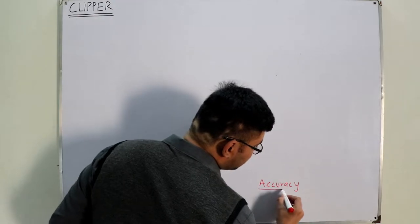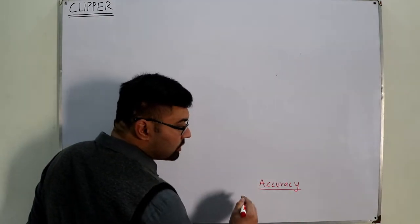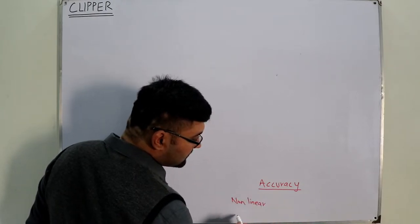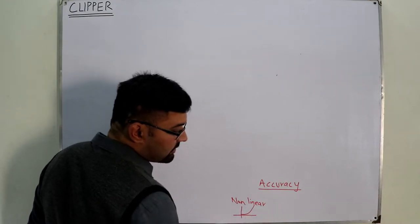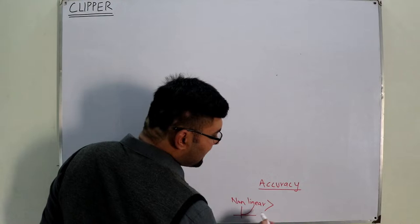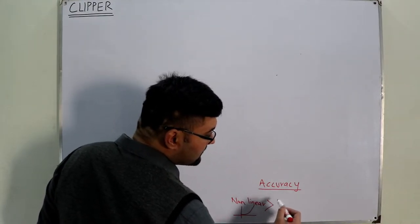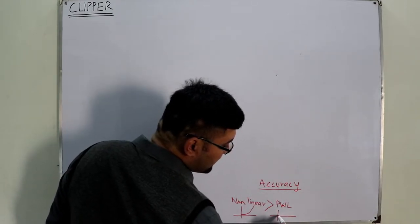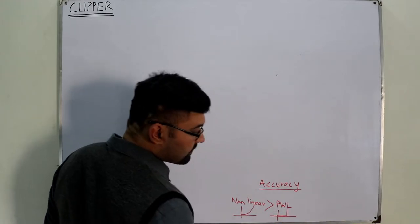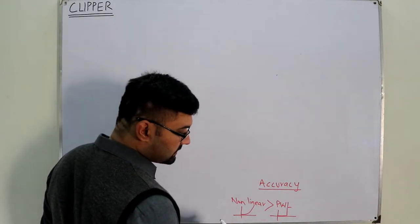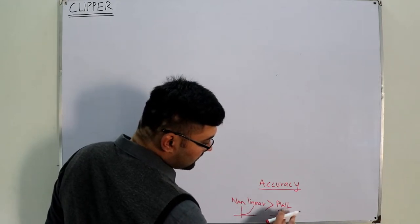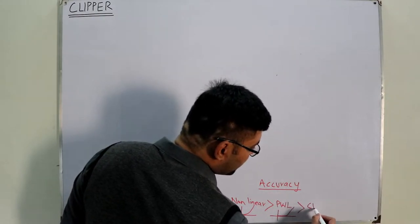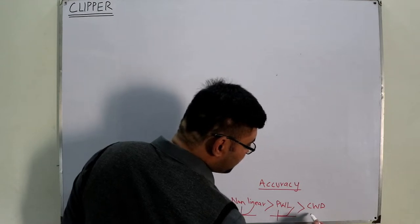In that previous video I talked about the accuracy of the approximation of the analysis while using the diode models. The most accurate model is the original model — that is the nonlinear model. Its accuracy is the greatest. In that model you have a barrier potential and you have a diode resistance. After this you have the piecewise linear equivalent circuit, in which the graph has a barrier potential but no diode resistance.